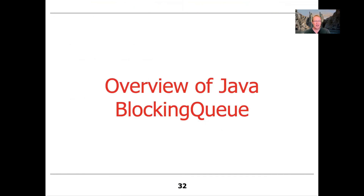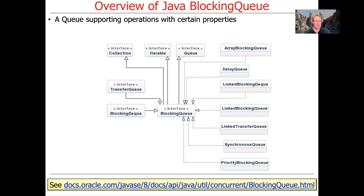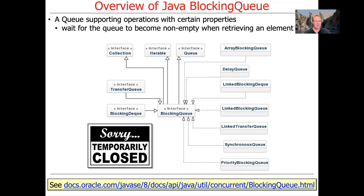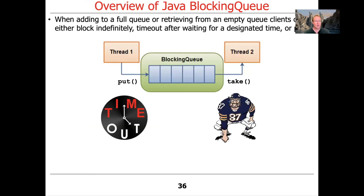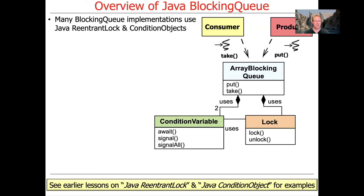The last topic is BlockingQueue — a queue with specific blocking properties. If you try to take something from an empty queue, you have to wait; if you try to put something in a full queue, you have to wait. Depending on which method you call, you can block indefinitely, timeout after a certain time, or return immediately. Many BlockingQueue implementations use Java ReentrantLock and Condition objects under the hood, as seen when we looked at the ArrayBlockingQueue implementation in earlier lessons.